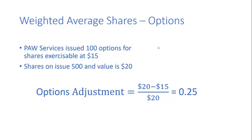To the extent that the options are paid for at $15, and to the extent that this is less than the current stock price of $20, there is a dilutive effect of the options of $5 in relation to the total value of the shares being issued at $20. So the options adjustment factor is 0.25. The shares coming from the options have two components: a paid-for component which isn't dilutive, and an unpaid component which is dilutive — and the unpaid component is 25% of the share value.